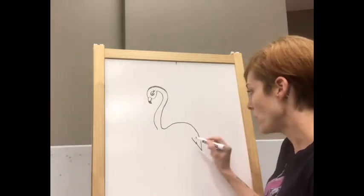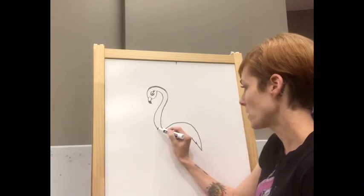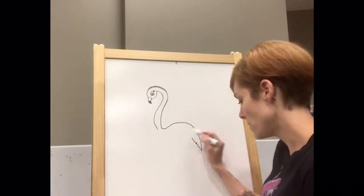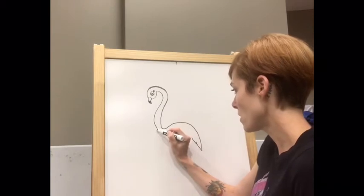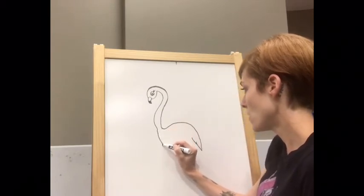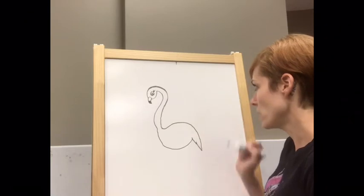Then we will make the bottom. We're going to connect here and here with a long rounded line. I'm going to start over here and then come up and connect right where the tail is.